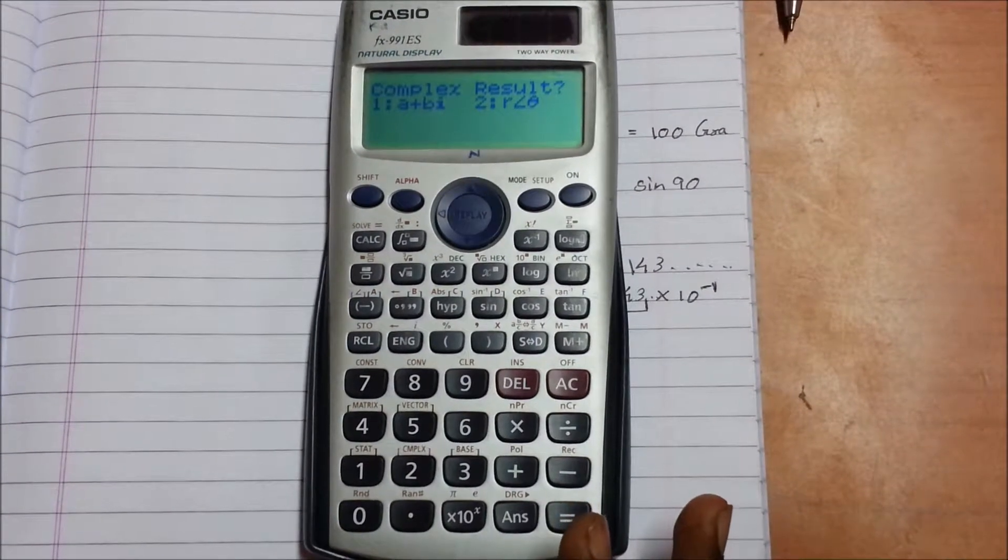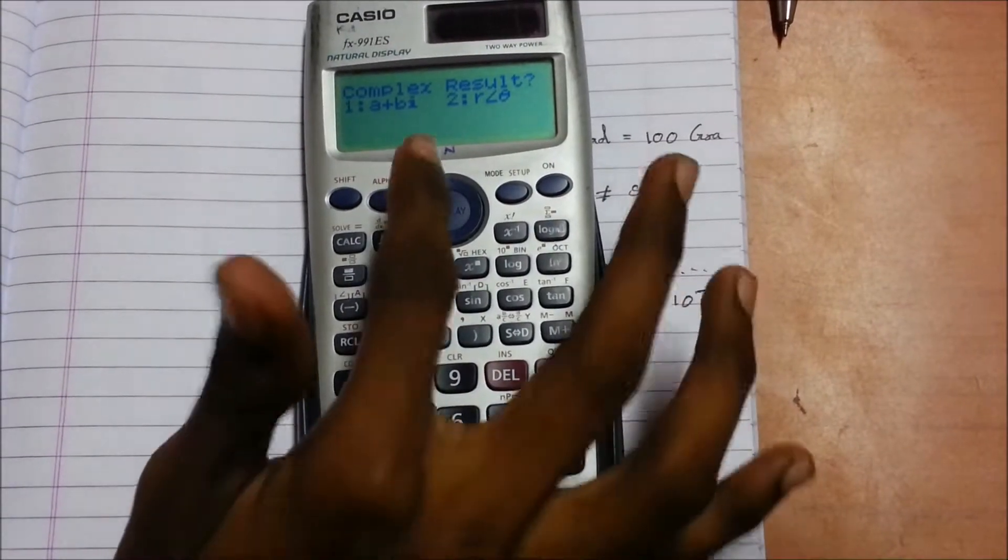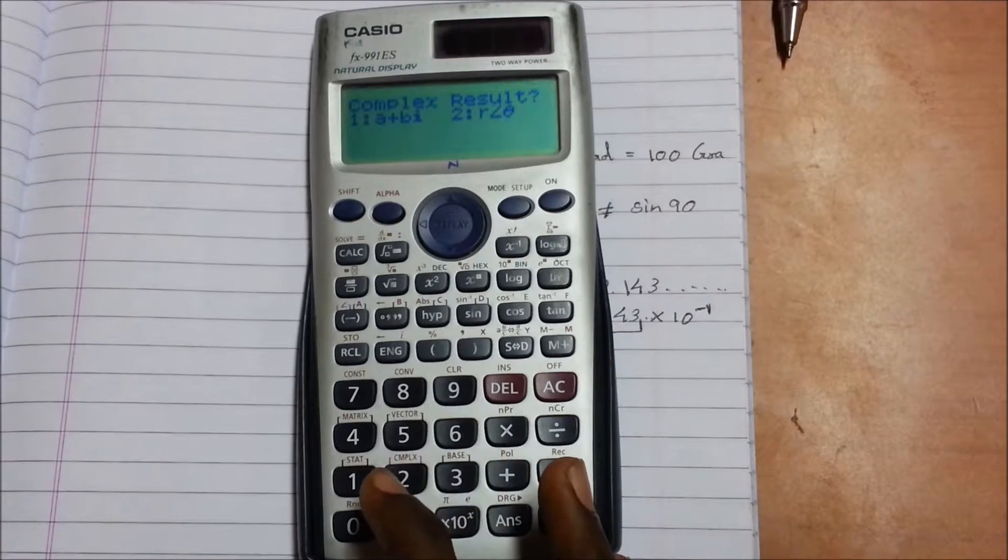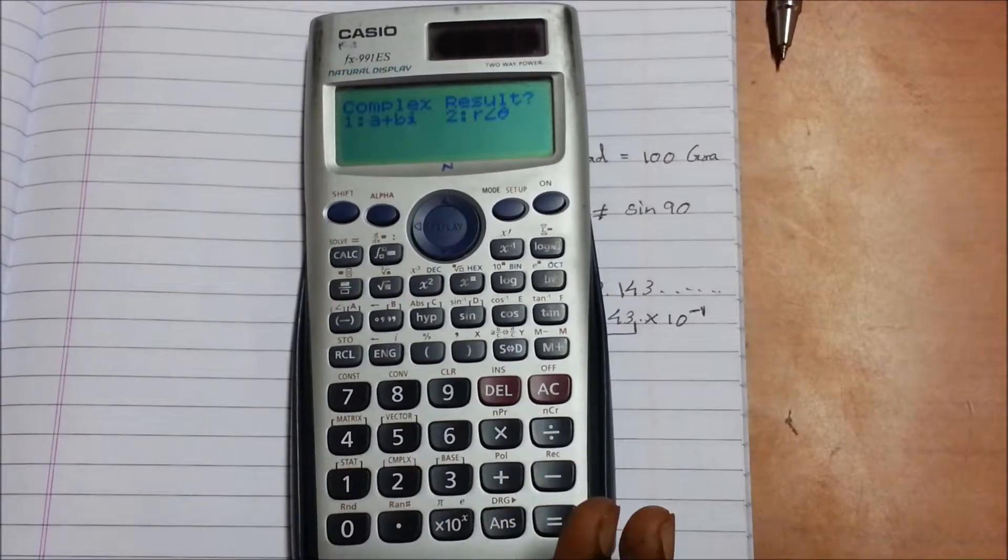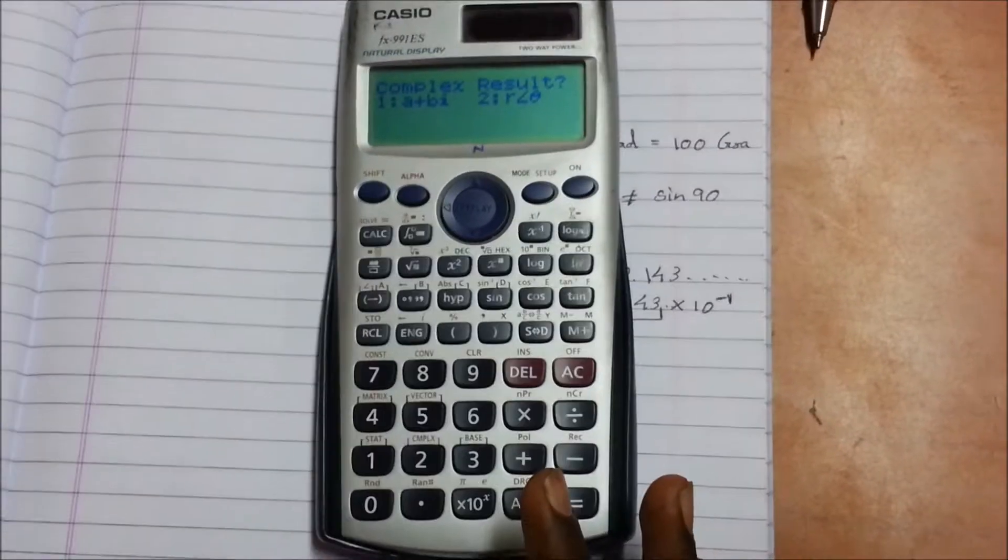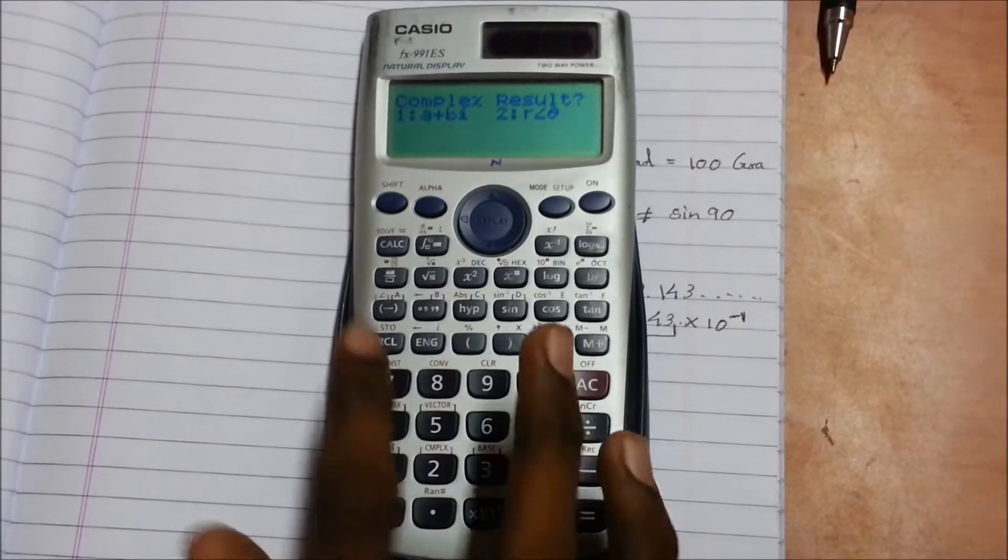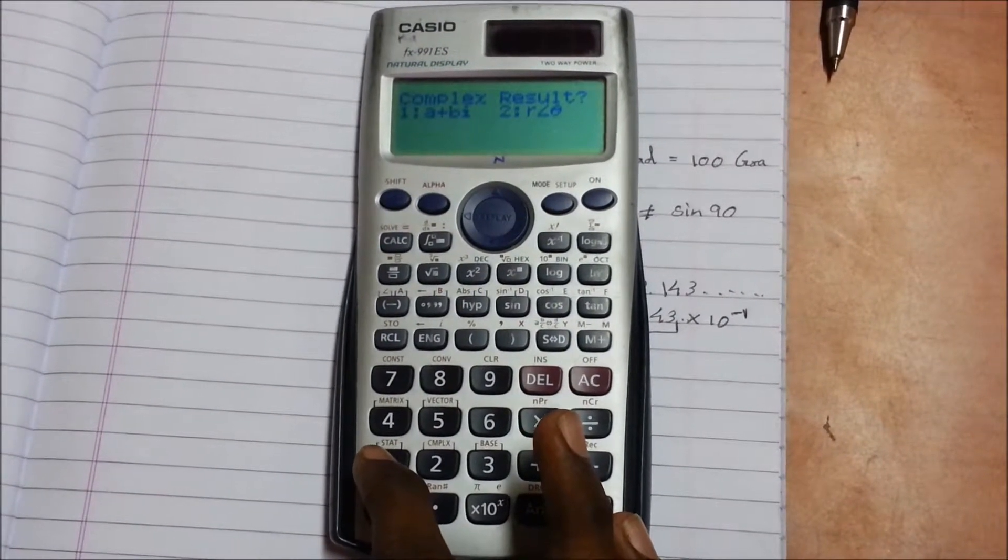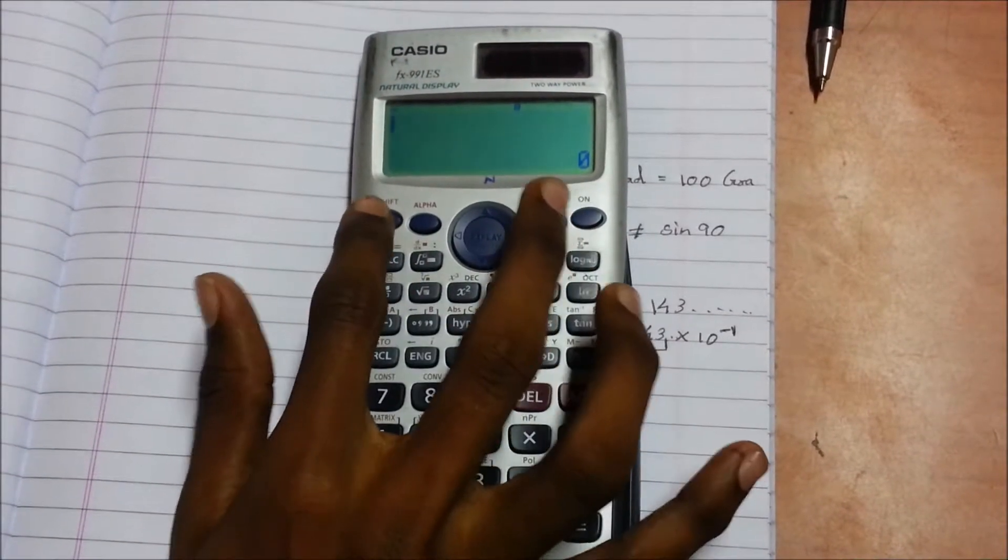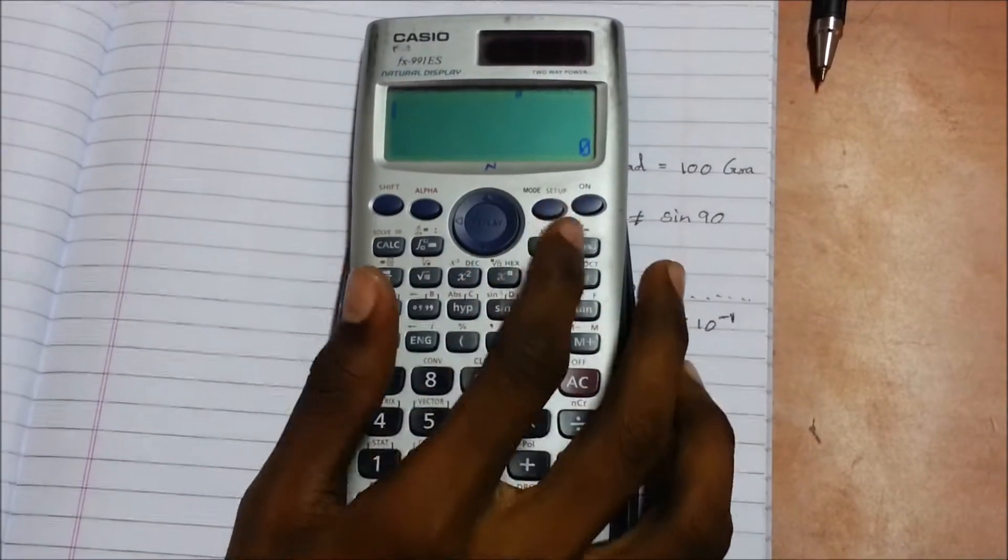If you press the one button, it will show the answers in a plus bi format. Or else it will give the answers in r angle theta. Press the one button if you need it in a plus bi format. Press shift mode to go into mode to use the complex function.